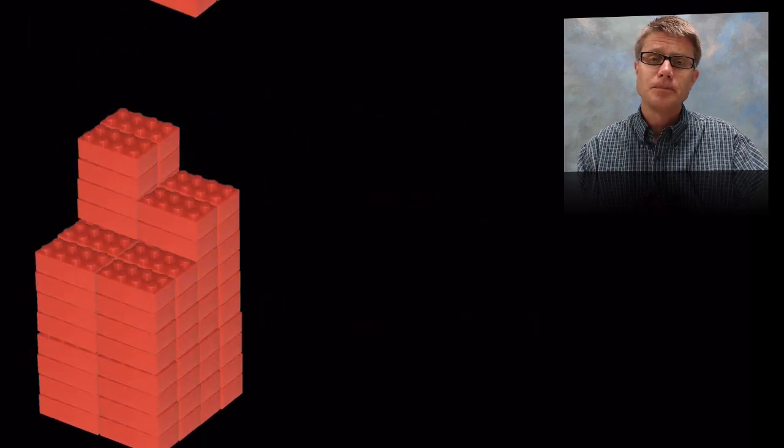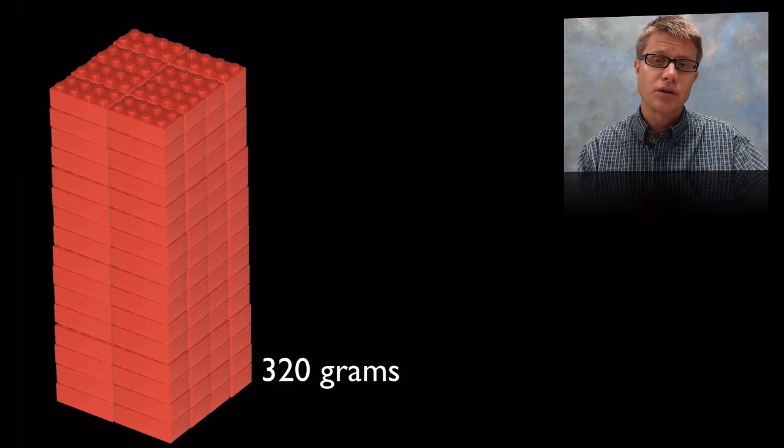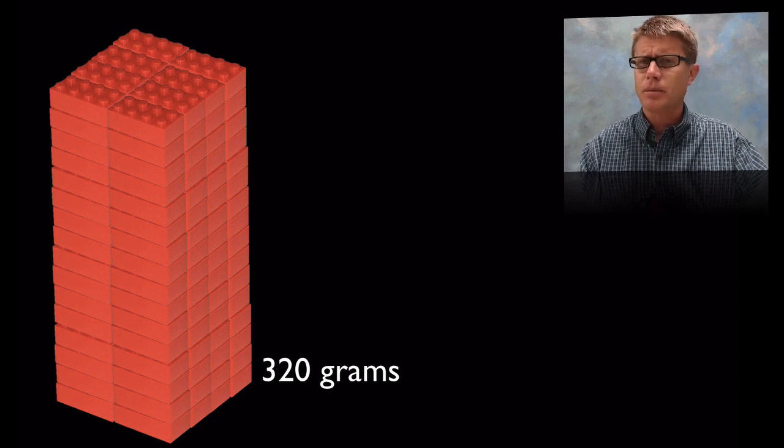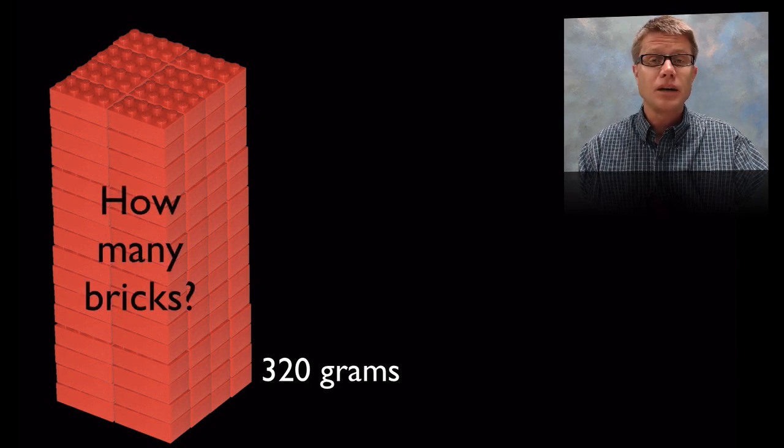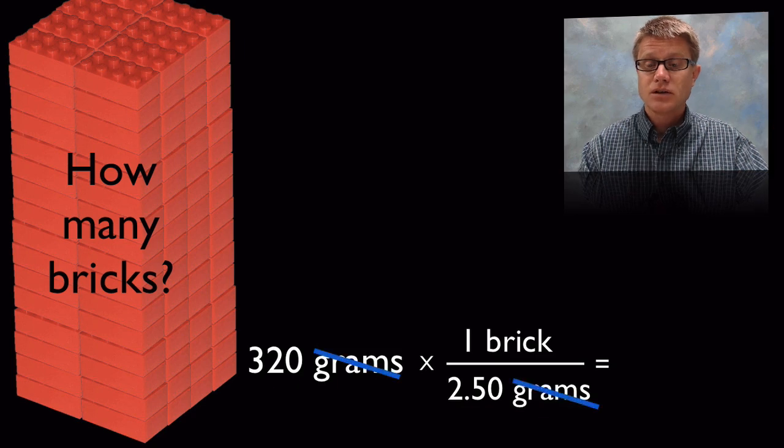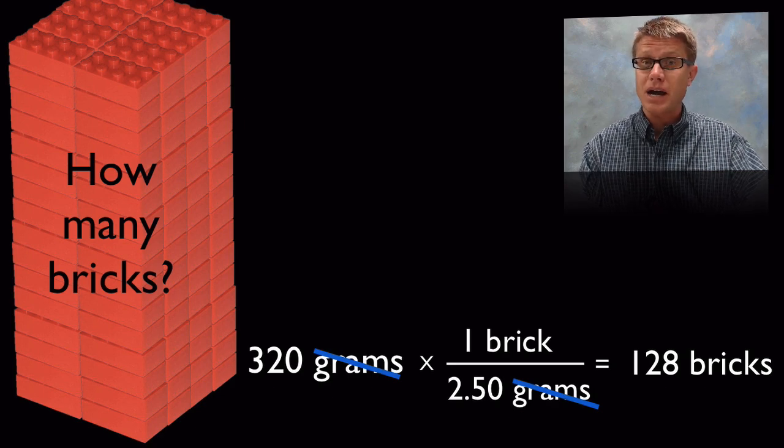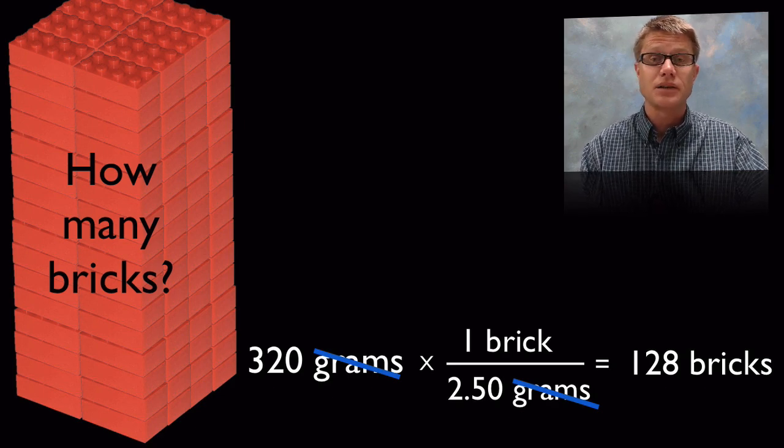But now let's get to solving it the other way. In other words if I give you a big structure that weighed 320 grams, could you work backwards to figure out how many bricks are in that structure? Well you'd use factor label to figure that out. In other words if each brick weighs 2.5 grams I can write it out like this. Now we can cancel off those grams. And so what I get is 128 bricks in that structure. So we can work backwards from that mass and figure how much stuff is inside there.